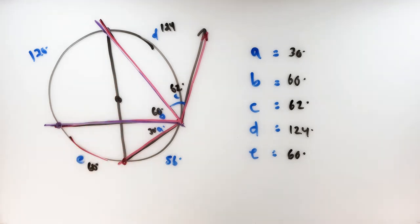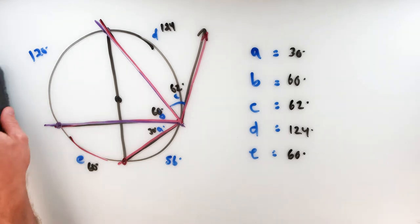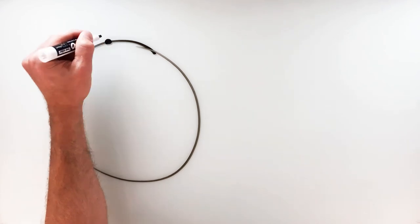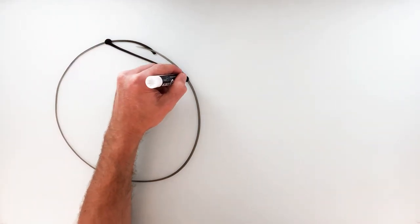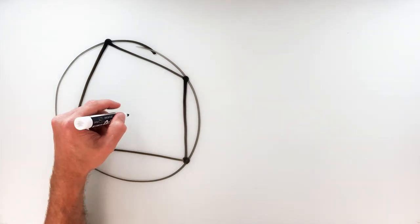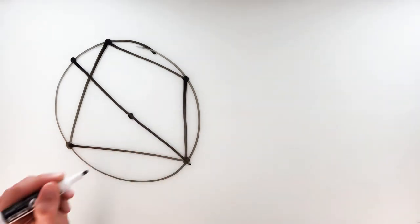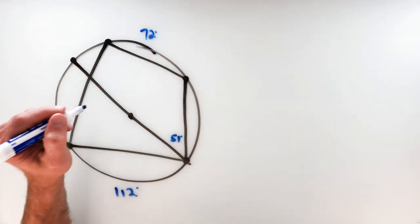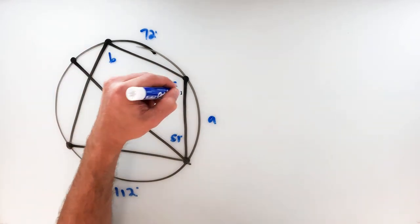For our last example, we're going to utilize a quadrilateral inscribed inside of a circle — opposite angles are supplementary. We've got a diameter, arcs of 112 and 51 and 72, and we're looking for angles A, B, C, and D.